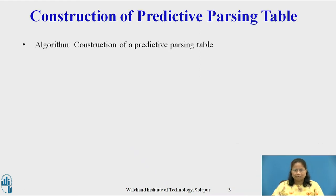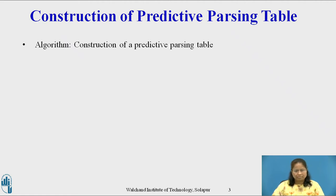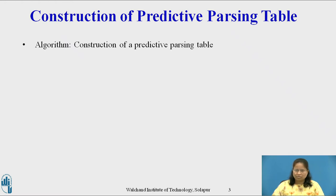The following algorithm can be used to construct a Predictive Parsing Table for a grammar G. The idea behind the algorithm is the following: suppose capital A derives alpha is a production with small a in the First of alpha. Then the parser will expand capital A by alpha when the current input symbol is small a. When alpha equals epsilon or alpha derives epsilon in zero or more steps, then we should again expand capital A by alpha if the current input symbol is in Follow of capital A, or if the dollar on the input has been reached and dollar is in Follow of capital A.